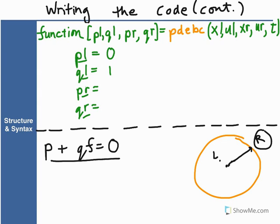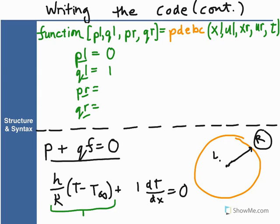On the right side, we have a convection boundary condition. That was dT/dx equals h/k(T minus T infinity). We can rearrange this into the P plus QF form, and what we get is h/k(T minus T infinity) plus one dT/dx equals zero. This whole thing becomes our P, and this becomes our Q. So we can write that in MATLAB in the code as h over k T minus T infinity, and our QR is just one.